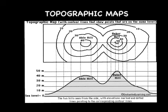A line on a topographic map that represents an area with equal elevation is called a contour line. Multiple contour lines represent areas with different elevations. Generally, every fifth contour line is darker in color and has the elevation written on it. These are called index contour lines.